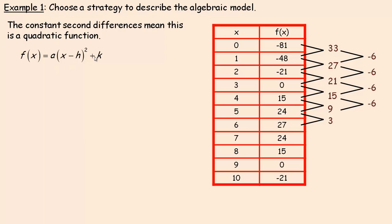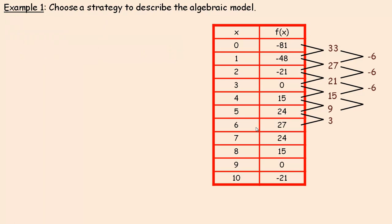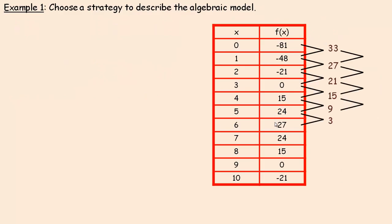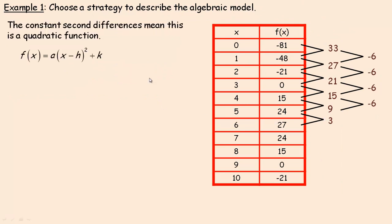Remember, H and K are the coordinates of the vertex. The vertex would be at (6, 27) — selling 600 boards makes $270,000 profit. I know it's the vertex because that's the highest point; going one less or one more on either side goes down the same amount. So the vertex is at (6, 27): H equals 6 and K equals 27.